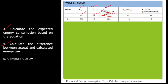Step 5: calculate the difference between actual and calculated energy use. You find E_actual minus E_calculated. For the first point, E_actual = 340 and E_calculated = 332, so the difference is +8. For the next point, E_actual = 340 and E_calculated = 356, giving 340 − 356 = −16. The difference can be positive or negative.